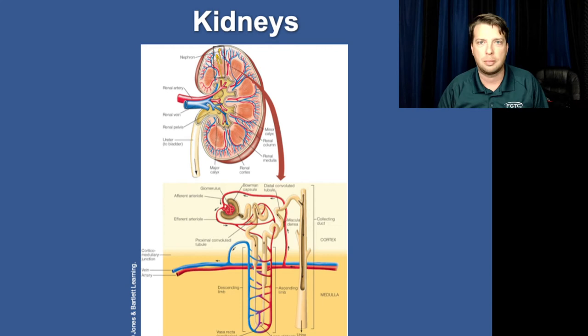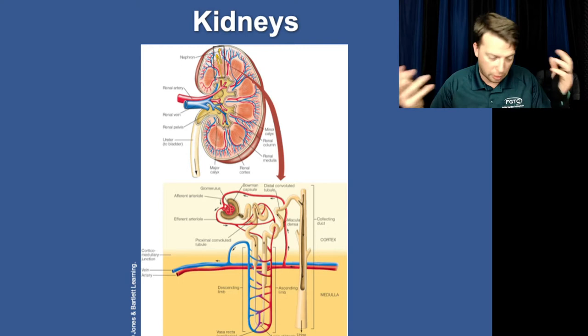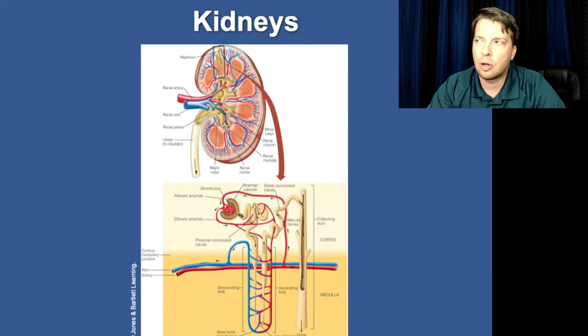The answer is the proximal convoluted tubule, distal convoluted tubule, and loop of Henle. Those two tubules and the loop of Henle all reabsorb that filtrate — specifically the water out of the filtrate — in order to make urine. Urine has been concentrated in some way based on the needs of the body.